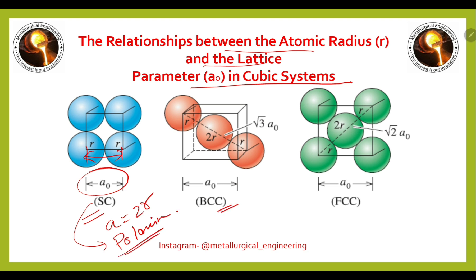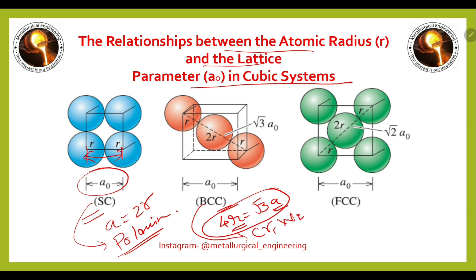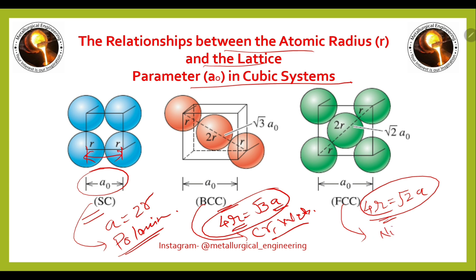In case of body-centered cubic, the relation is 4R = √3·A. This is the relation between the atomic radius and lattice parameter for BCC. Examples for BCC are chromium, tungsten, etc. For face-centered cubic, the relation between the atomic radius and lattice parameter is 4R = √2·A. Examples include nickel, aluminum, etc.